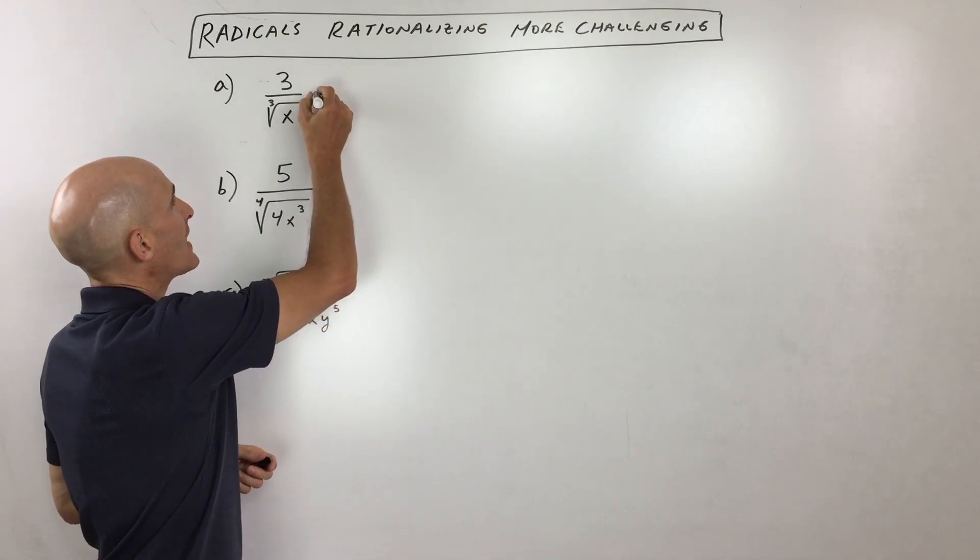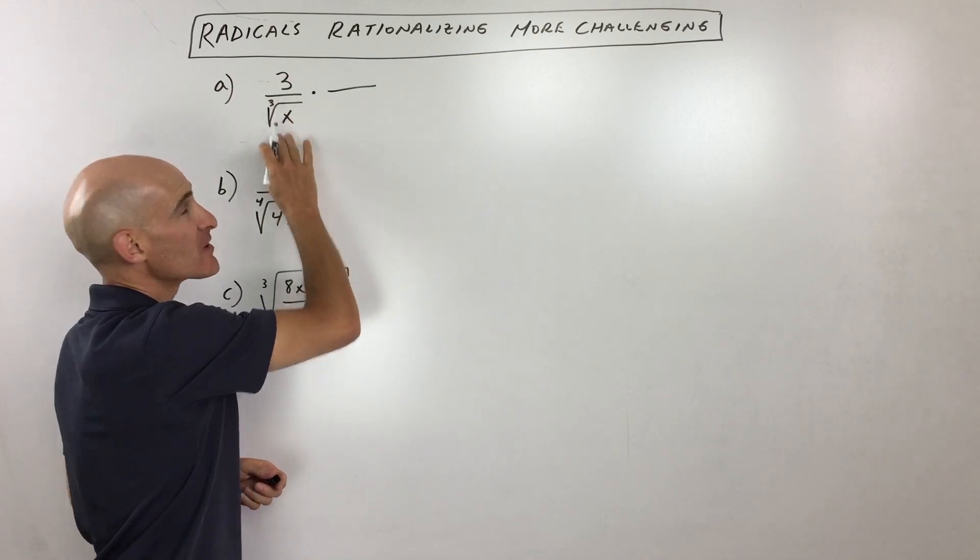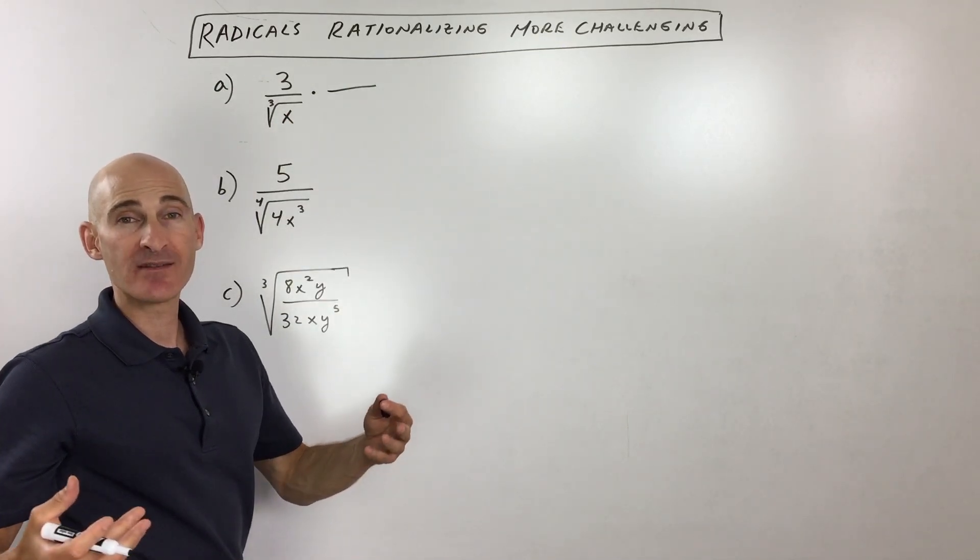Well, what we need to do is analyze what we need to multiply by to get rid of this cube root in the denominator. We just want something without a radical.